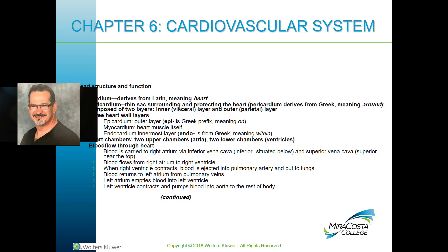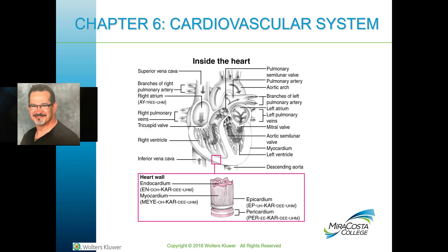Blood flow through the heart — you can look at the next diagram to see this. Blood is carried through the inferior vena cava, which is lower, and the superior vena cava, and dumped into the right atrium, then into the right ventricle. That blood is pushed out and ejected into the pulmonary artery and into the lungs. Then blood comes back to the heart, to the left atria and left ventricle, and the left ventricle contracts and pumps blood to the rest of the body.